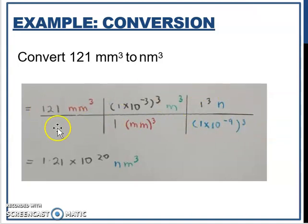So press the calculator. 121 times 1 times 10 to the power of negative 3 divided by 1 times 10 to the power of negative 27. You will get 1.21 times 10 to the power of 20. Then the unit here is nanometer cube.